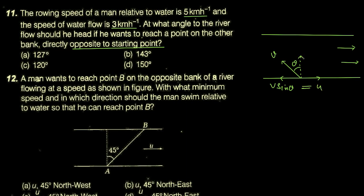اور جو v cos theta کا component ہے وہ river کو cross کرانے میں help کرے گا۔ تو condition یہ ہے کہ v sin theta = u۔ تو sin theta آگیا u/v۔ u دی ہے 3 اور v دی ہے 5، تو sin theta = 3/5۔ تو یہ angle theta جو بنا وہ 37 degree ہو گیا۔